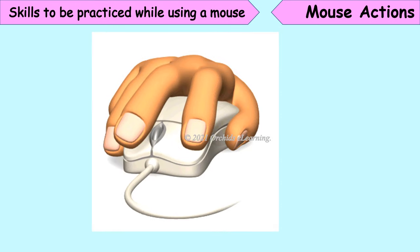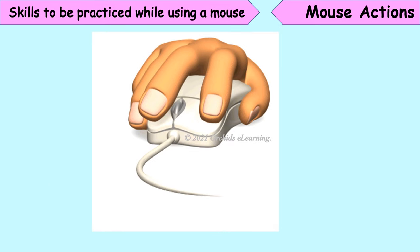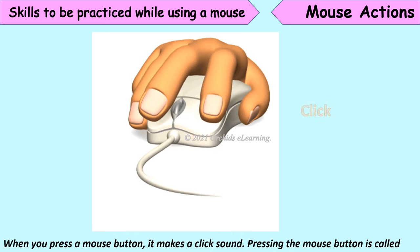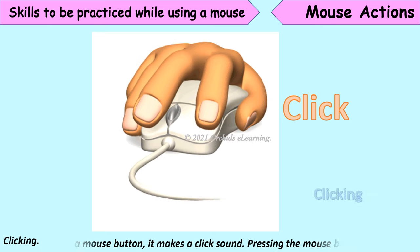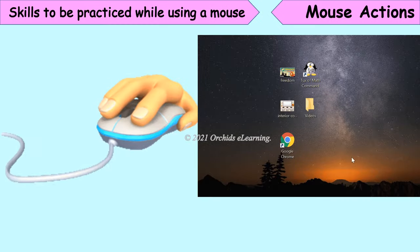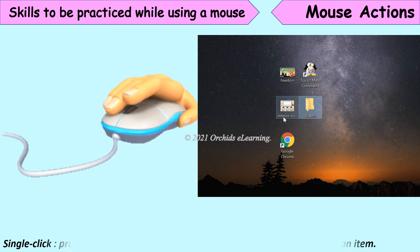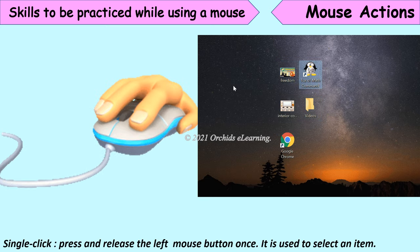Skills to be practiced while using a mouse: When you press a mouse button, it makes a click sound. Pressing the mouse button is called clicking. Let's see various mouse actions. Single click: Press and release the left mouse button once. It is used to select an item.